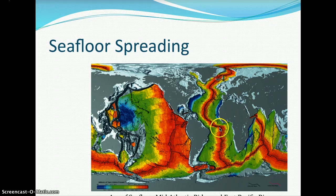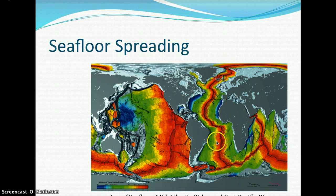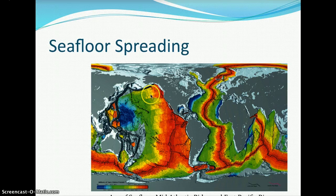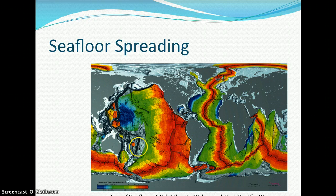Here is a diagram showing the age of the seafloor, including the mid-Atlantic ridge and the East Pacific Rise. North America and South America are shown, with the mid-Atlantic ridge running up the center. In red is the youngest crust. The East Pacific Rise is also visible, with North America, the California coast, South America and Peru, and the Pacific Ocean basin shown.